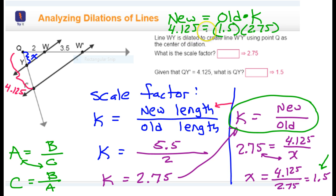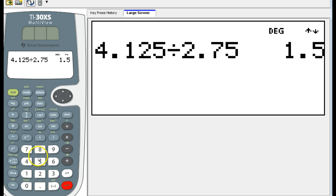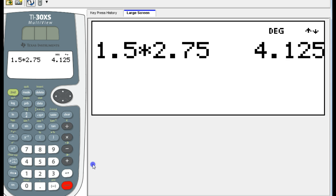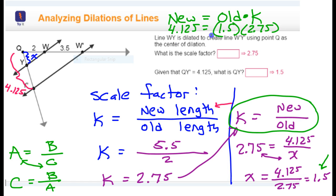And then the scale factor is 2.75. So, the new distance should equal the old distance times 2.75. Let's check it out in the calculator. I'll just multiply 1.5 times 2.75. And if I do 1.5 times 2.75, oh, look, 4.125, which is exactly what I'm supposed to get. So, it does make sense.